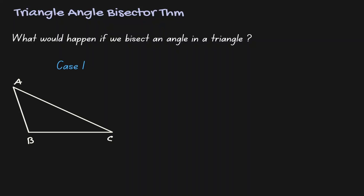Welcome, let's discuss the triangle angle bisector theorem. Given the triangle on the left, what would happen if we bisect an angle in this triangle? In this case, let's bisect angle B.